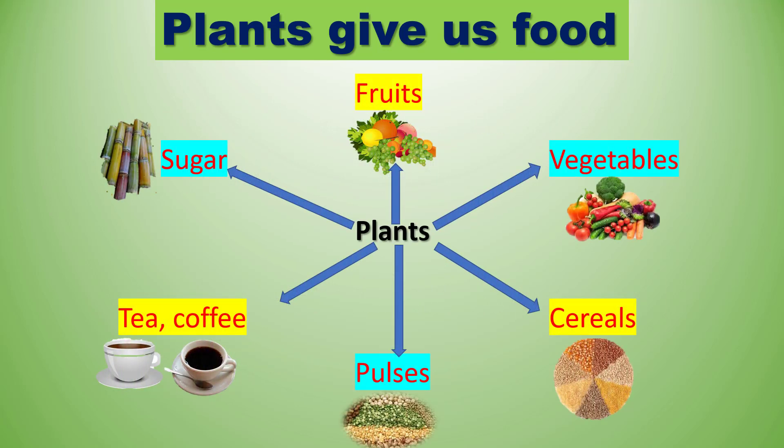Plants are the main source of food for human beings and animals. They give us many things such as fruits, vegetables, cereals, pulses, tea, coffee, sugar, paper, rubber, wood, etc.